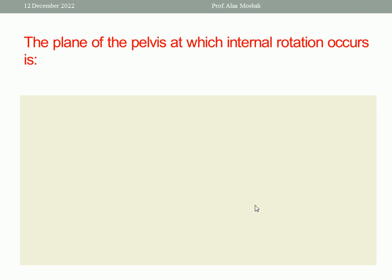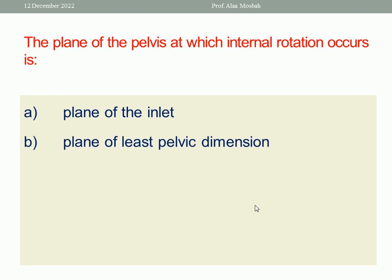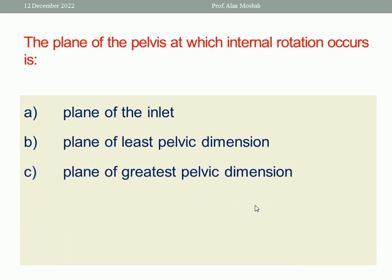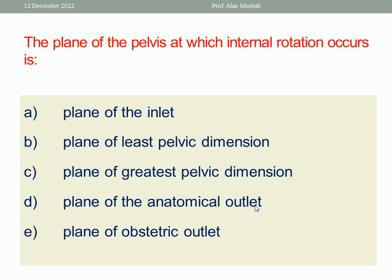The plane of the pelvis at which internal rotation occurs is — A: plane of the outlet. B: plane of least pelvic dimension. C: plane of greatest pelvic dimension. D: plane of the anatomical outlet. E: plane of the obstetric outlet. The one best response is the plane of greatest pelvic dimension.